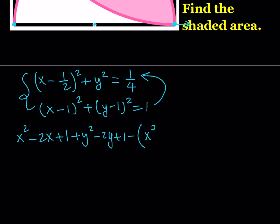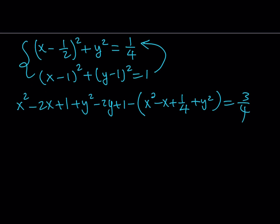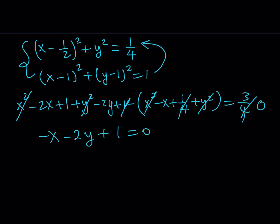After subtracting, x² and y² cancel out. We get −2x + x = −x, and 1 − 1/4 = 3/4 also cancels out, but there is a 1 remaining on the left-hand side. We end up with −x − 2y + 1 = 0. The relationship between x and y is linear, which is nice. We can write this as x = 1 − 2y.